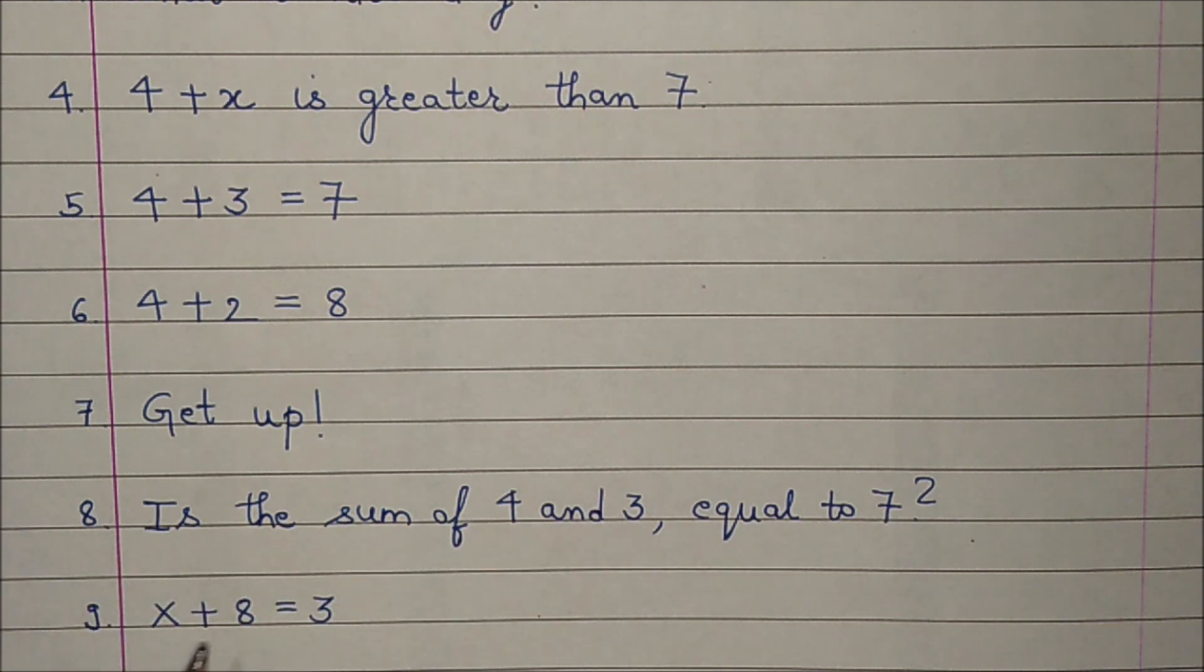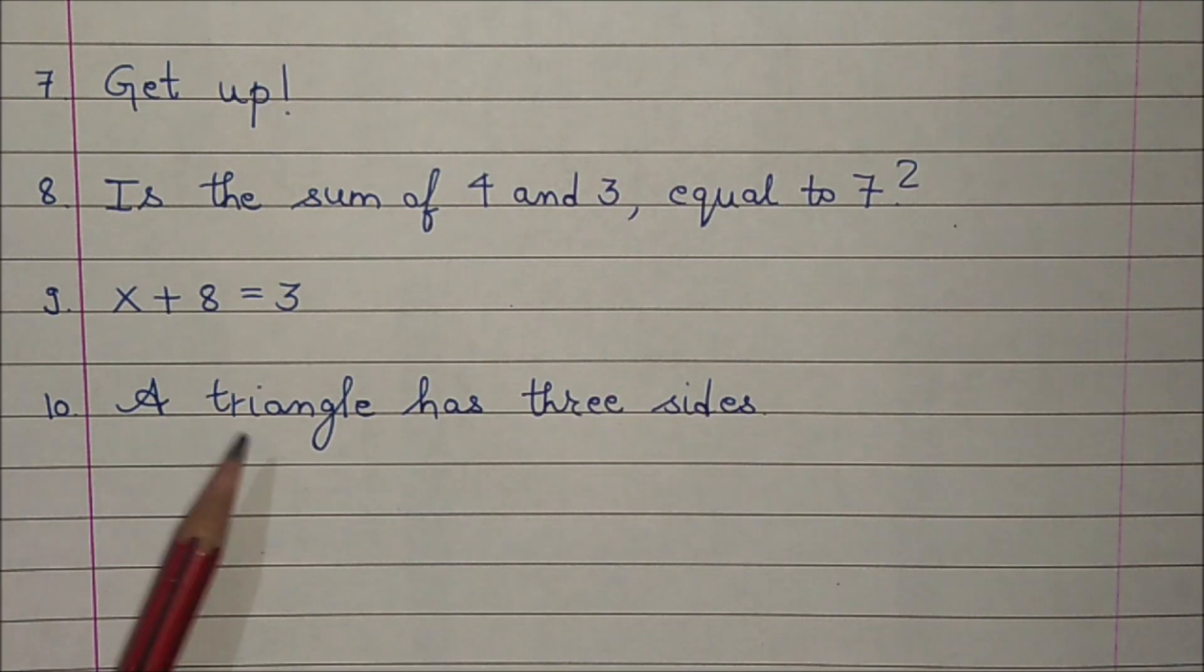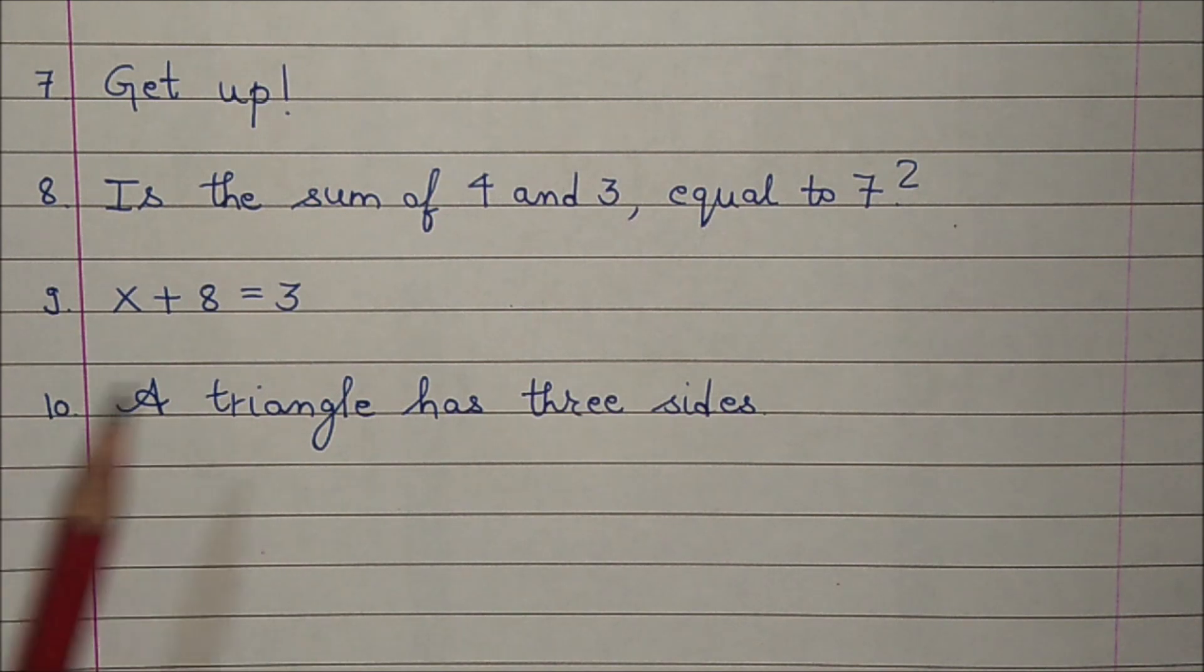Number 9: x plus 8 is equal to 3. And number 10: A triangle has 3 sides. Please post the correct answer in the comment section quickly.